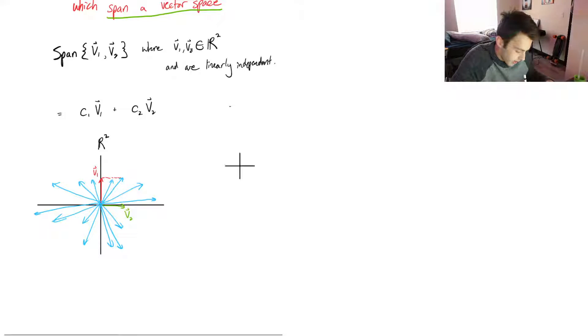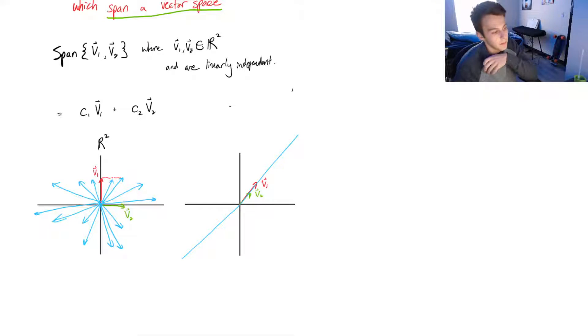But that's because V1 and V2 are linearly independent. So remember that there's other cases where, if we had a vector, like this red vector, if this was V1, and then we had another vector which goes in the same direction, our span in that case would be a line.